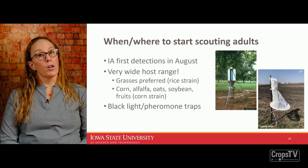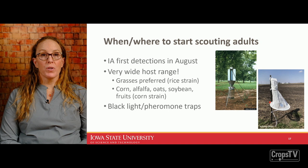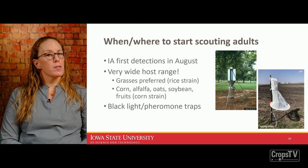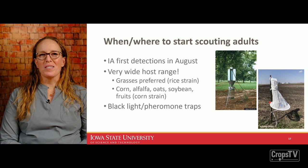In Iowa in 2021, we had severe injury in grasses, corn, alfalfa, soybean, turf grass, and athletic fields — many different plant types. My best guess is that we had a mixture of the rice strain and the corn strain, but there are no visual differences between them. The only way to confirm the strain would be through a genetic test.